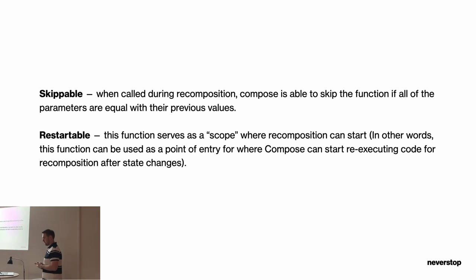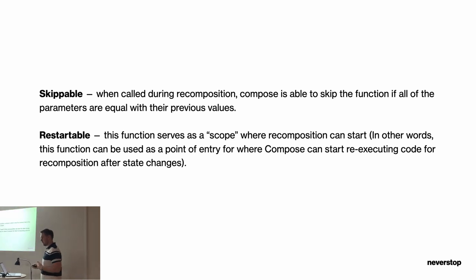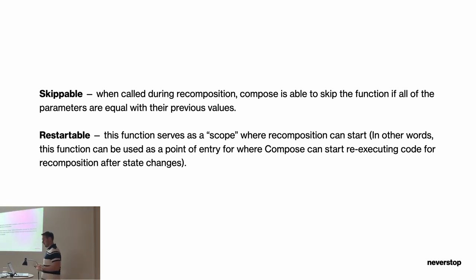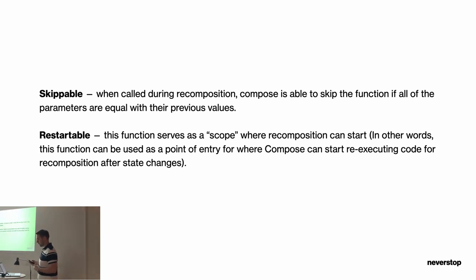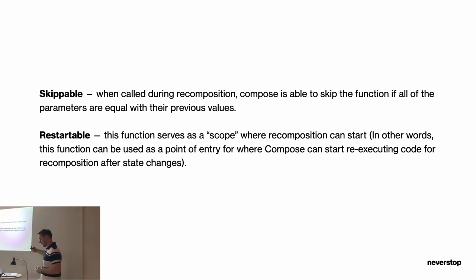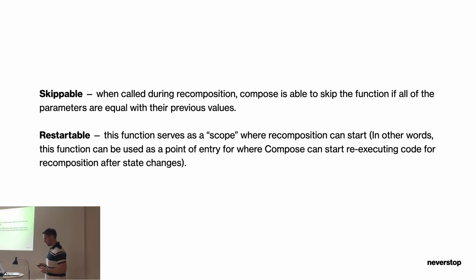Skippable means that when a function is called during recomposition, Compose is able to skip the function if all of the parameters are equal to their previous values. Compose tracks the state and the status. Restartable means the function serves as a scope where recomposition can start — in other words, this function can be used as a point of entry where Compose can restart re-executing code for recomposition after state changes.